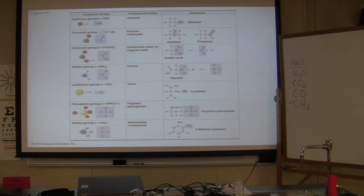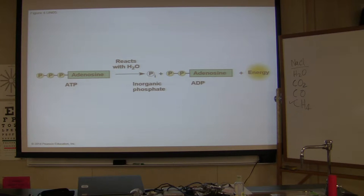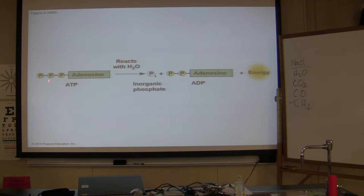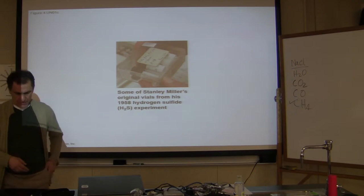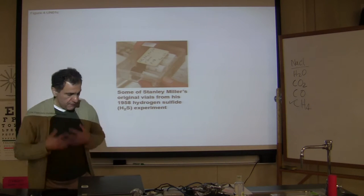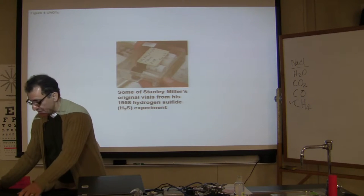Here is ATP — adenosine triphosphate — with three phosphate groups attached. When ATP breaks down, it forms ADP and gives you energy. When ATP breaks down, it gives you energy. We're talking about the phosphate groups here. And this is Stanley Miller's equipment and vials.